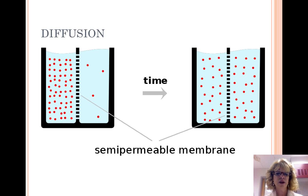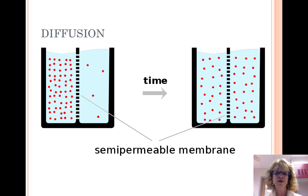This is considered a type of passive transport because it doesn't require energy. Diffusion occurs until equilibrium is reached. Oxygen in our lungs enters the red blood cells through passive transport. CO2 leaves the red blood cells and enters the lungs through passive transport.